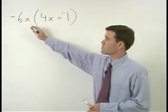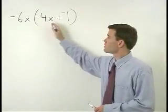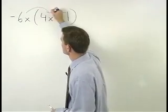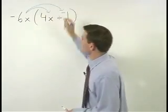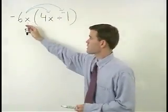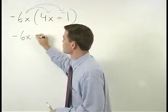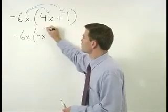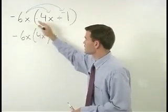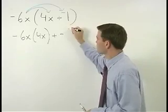Now we can distribute this negative 6x through each of the terms inside the parenthesis. That gives us negative 6x times 4x plus negative 6x times negative 1.